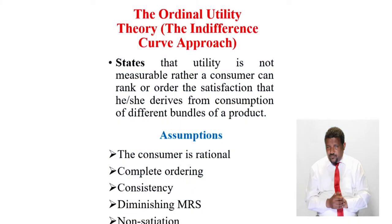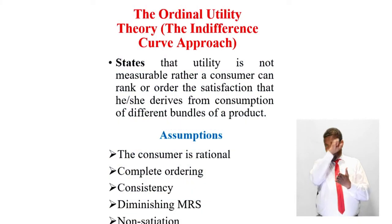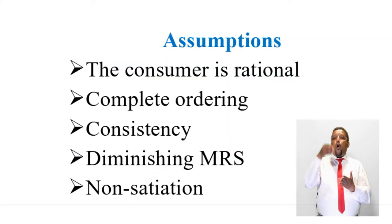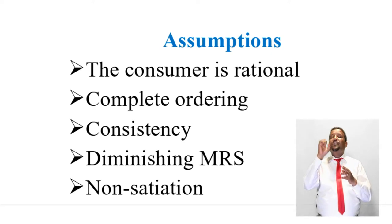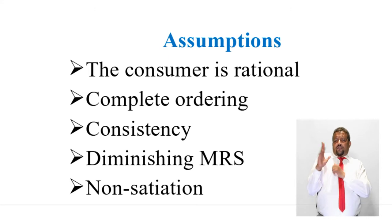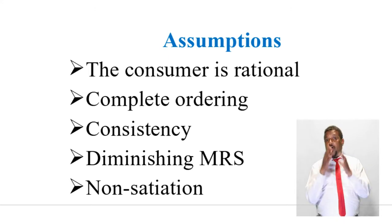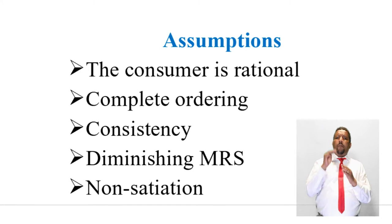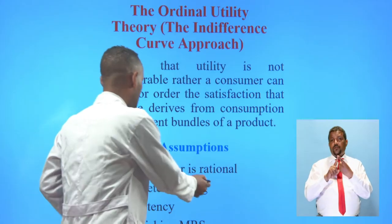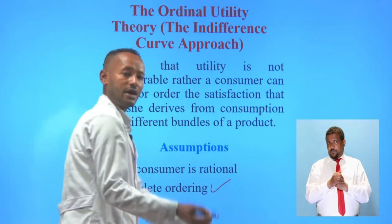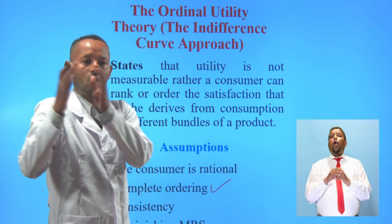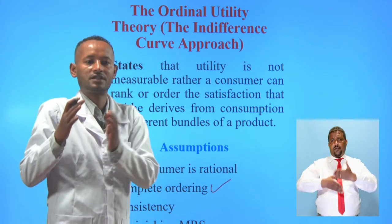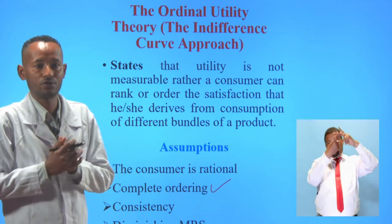Here are the assumptions of the ordinal utility theory, or the indifference curve approach. First of all, the consumer is rational. That means the consumer has a clear-cut preference and the consumer's maximum objective is maximizing total utility. The second assumption is there is complete ordering, meaning a consumer can rank or order the satisfaction derived from consumption of goods and services.